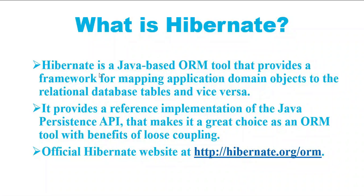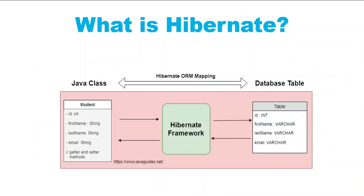Hibernate is a Java-based ORM tool that provides a framework for mapping application domain objects to relational database tables and vice versa. Hibernate provides a reference implementation of JPA, which makes it a great choice as an ORM tool with the benefits of loose coupling. Here you can see a diagram showing a Student Java class and a Student database table, with Hibernate acting as the ORM mapping between them.